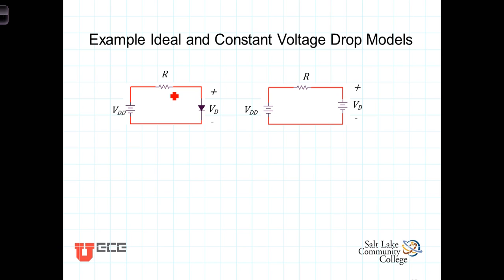So in the ideal diode case, V sub D would be 0 volts when it's conducting and open circuit when it's not conducting.